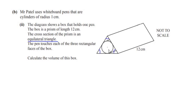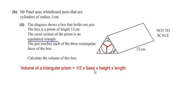The pen touches each of the three rectangular faces of the box, touching at three points. We need to calculate the volume of the box. Since this is a triangular prism, the volume is given as ½ × base × height × length, with length = 12 centimeters. The base and height are not given, so we need to find them first.